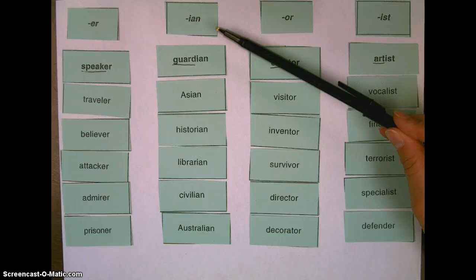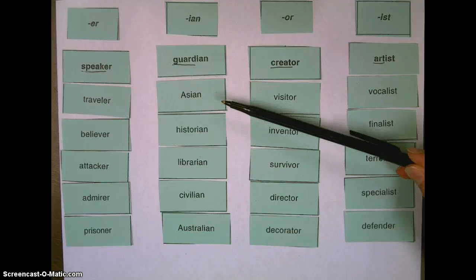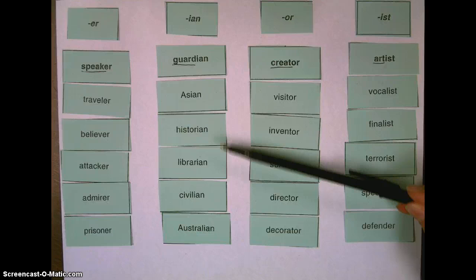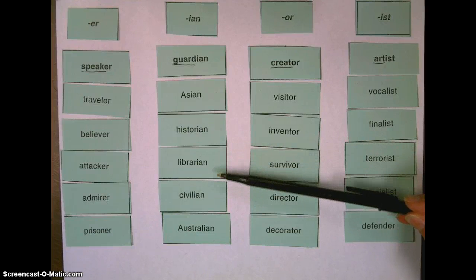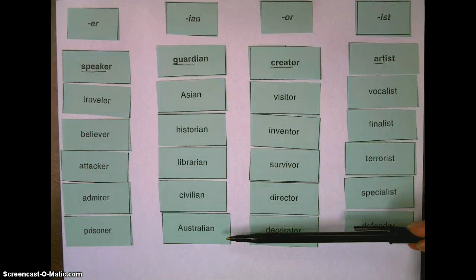The ian words: guardian, Asian, historian, librarian, civilian, and Australian.